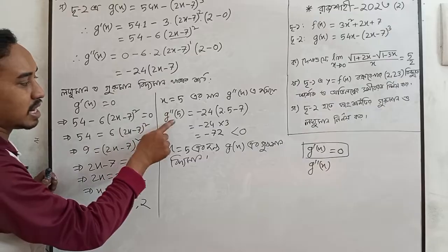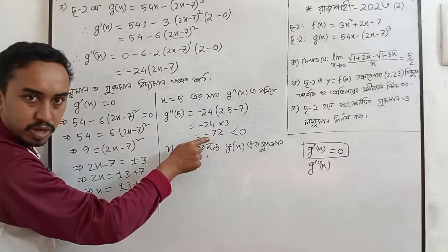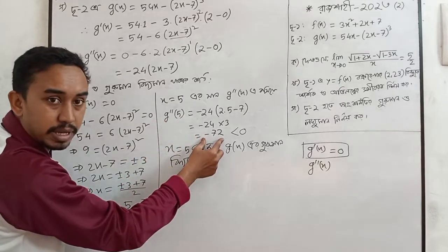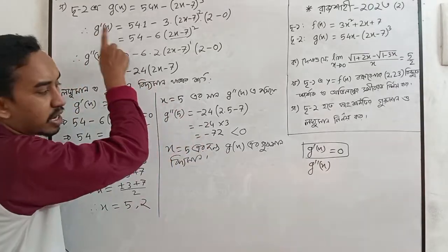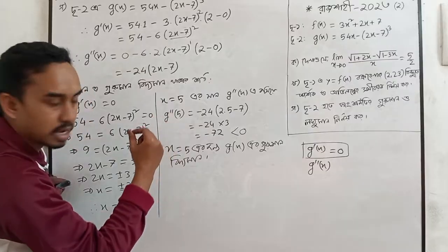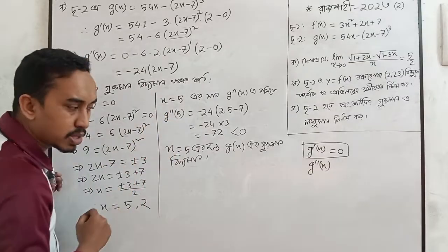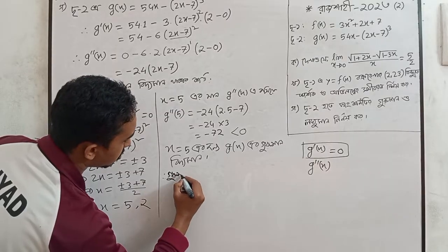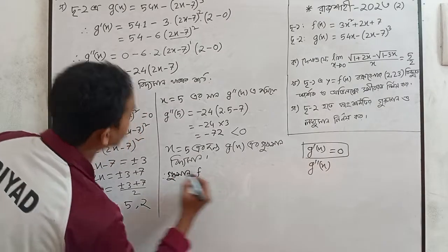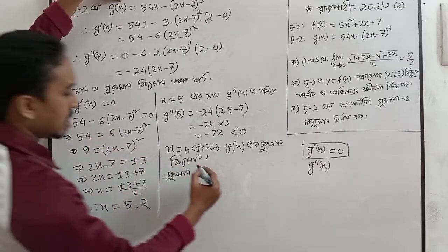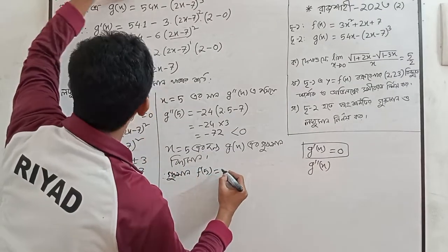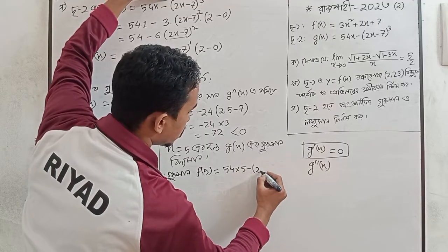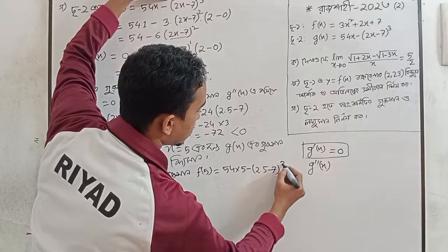So this means z double dash equals 9 at x equals 5. f of 5 equals 4 equals 5 minus 2 times 5 minus 7 cubed.